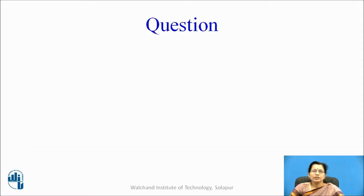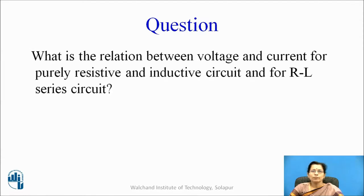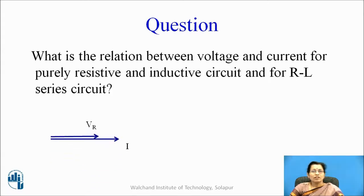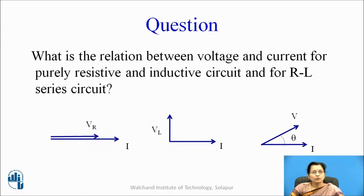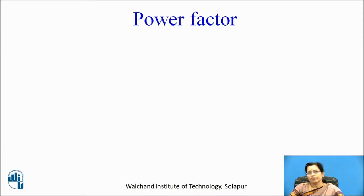Pause the video and think about this question: What is the relation between voltage and current for purely resistive, purely inductive, and RL series circuits? For a purely resistive circuit, voltage and current both are in phase. For a purely inductive circuit, current is lagging Vl by 90 degrees. And for an RL series circuit, current is lagging the voltage by theta degrees.